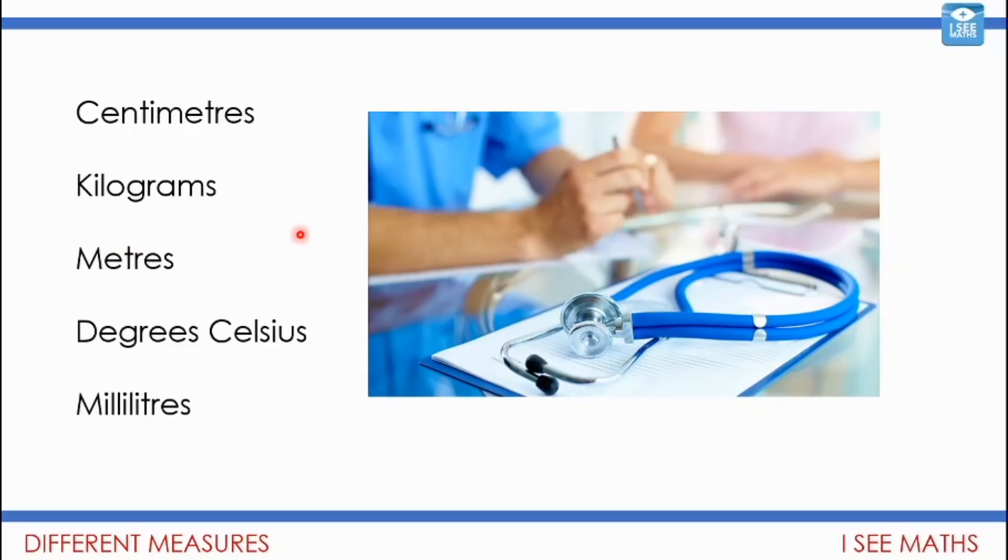If we're measuring the weight of a patient, that would normally be in kilograms. Grams would be too small a measure. It's a measure of weight, but I think it'd be too small for the weight of a person. If we're taking someone's temperature, then we would actually use degrees Celsius to work out their body temperature. And again, that's a completely different form of measures.